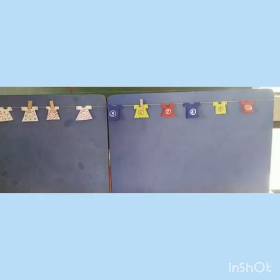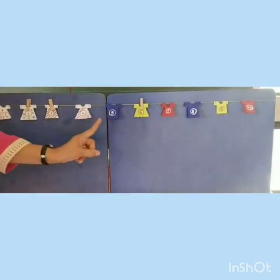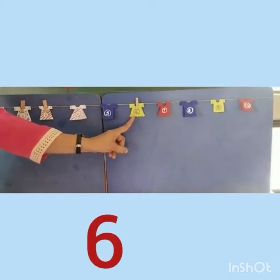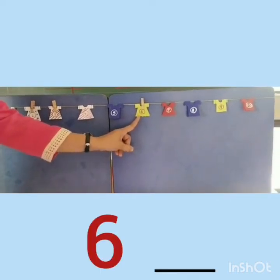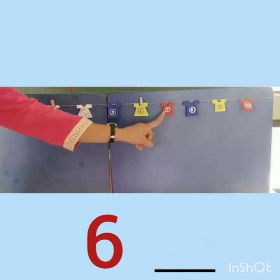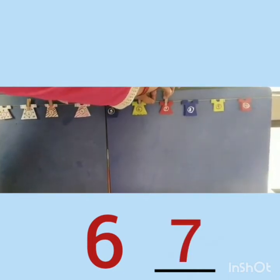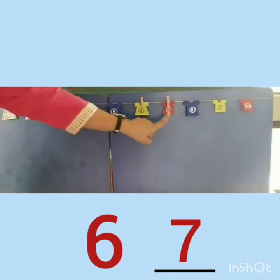Now, where is another bag? Can you see? Yes. Here it is. It is on the t-shirt where number six is written. Now, after six, which number comes? Yes. Number seven. So, we have to clip it here on number seven t-shirt.